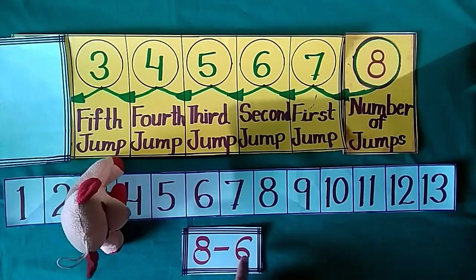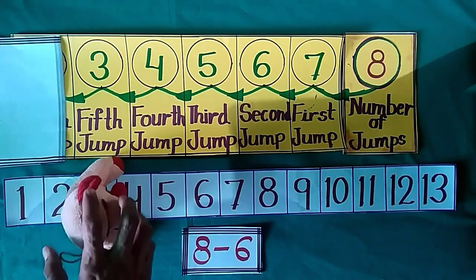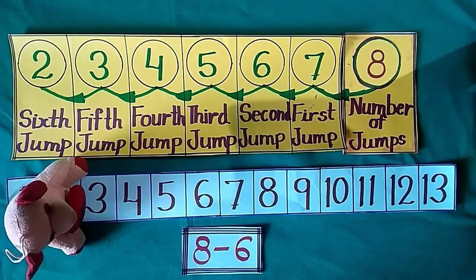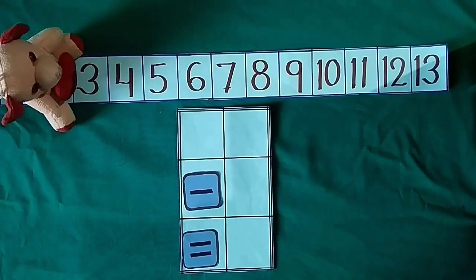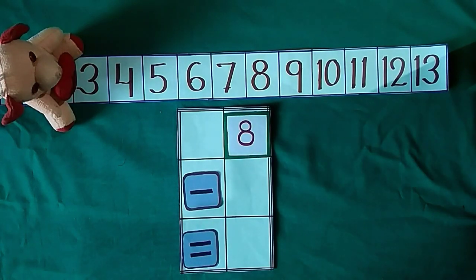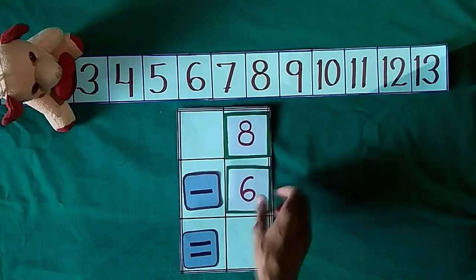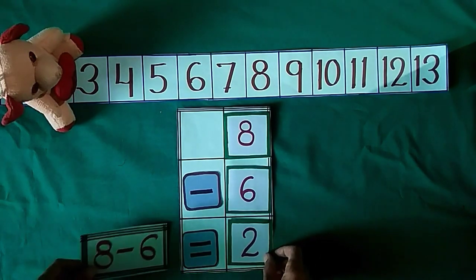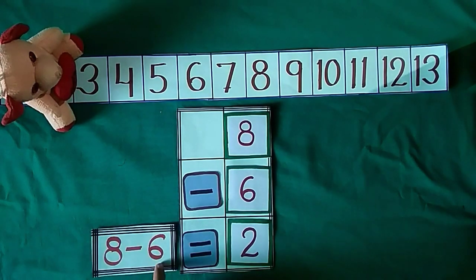He has to do 6 jumps. So with 6 jumps, he reached at 2. Jimmy stands at 8 and he takes 6 backward jumps. At last he reached at 2. So 8 minus 6 is equal to 2.